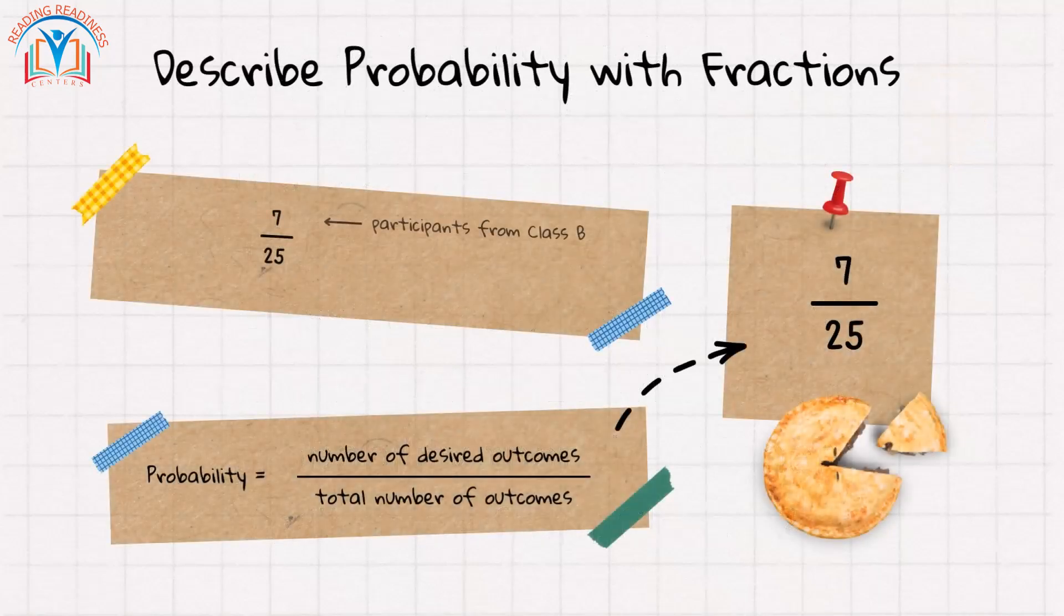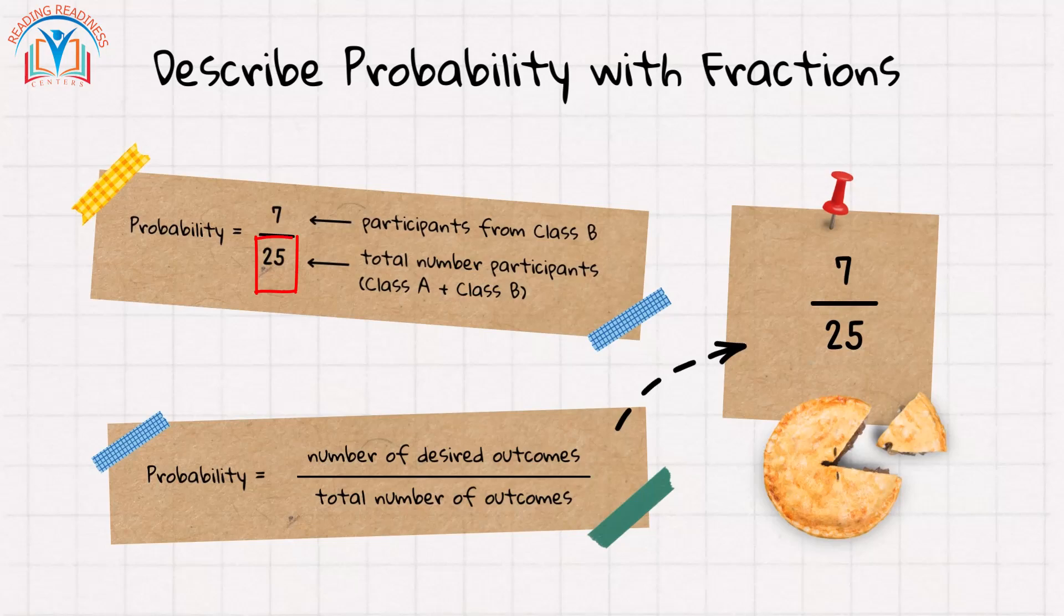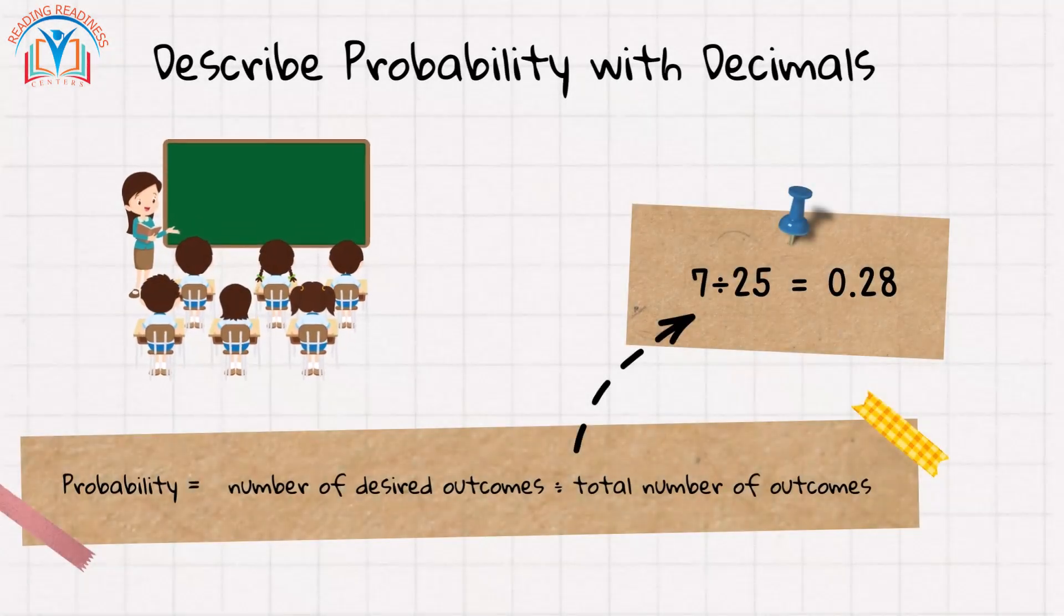The probability is the number of desired outcomes divided by the total number of outcomes. That's seven participants from class B out of 25 total participants. To express this probability as a decimal, we divide the number of desired outcomes by the total number of outcomes.